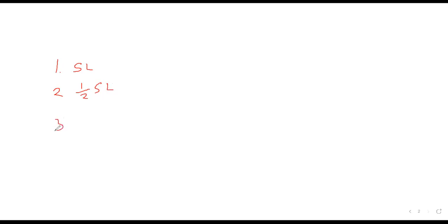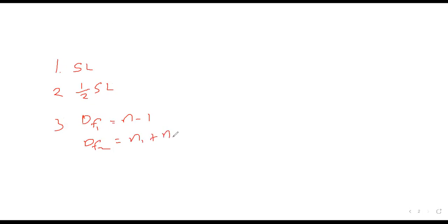For a single-tailed test, the degree of freedom for one sample is N minus 1. For two samples, the degree of freedom is N1 plus N2 minus 2, because you are subtracting one from each of them. Without much further ado, we'll try to find the readings for the following problems.